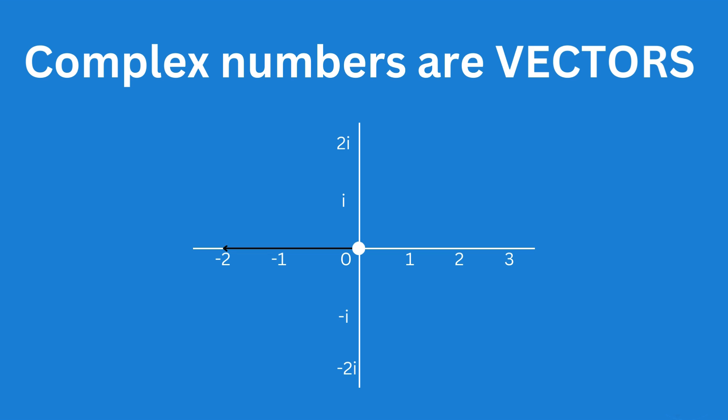Imaginary numbers are represented on their own number line, which only crosses the real number line at zero. This number line is at a right angle to the real number line. We also say it is perpendicular.